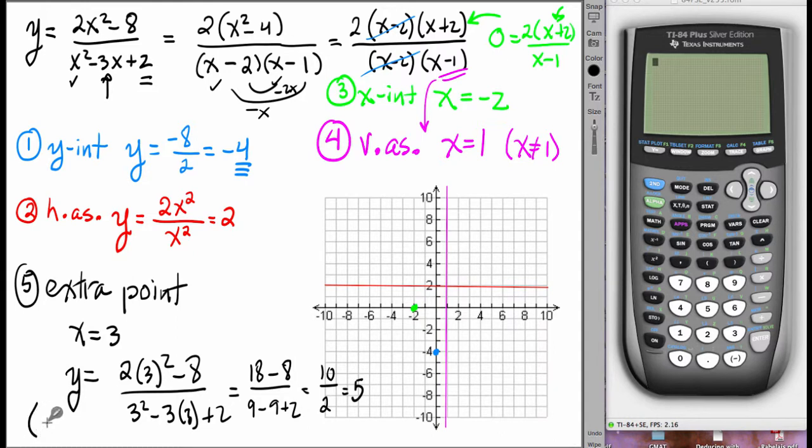So that means that the extra point we're looking to put into the graph occurs at 3 for x and 5 for y. So 1, 2, 3, 1, 2, 3, 4, 5, put that extra point in.